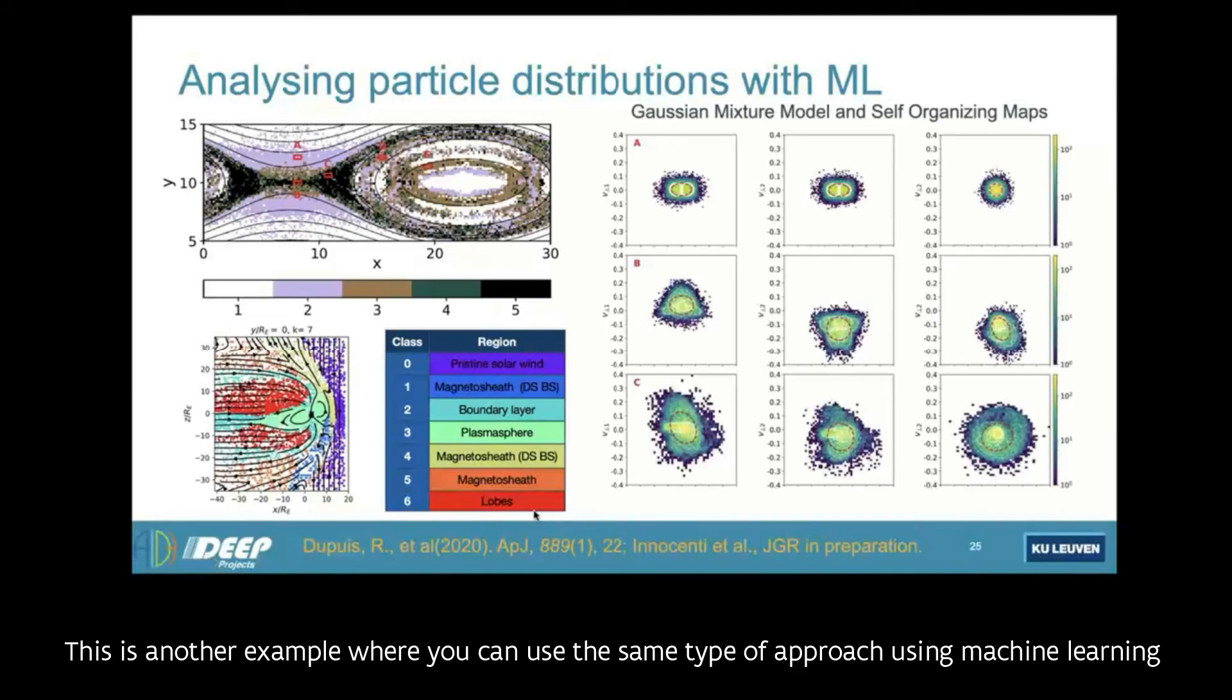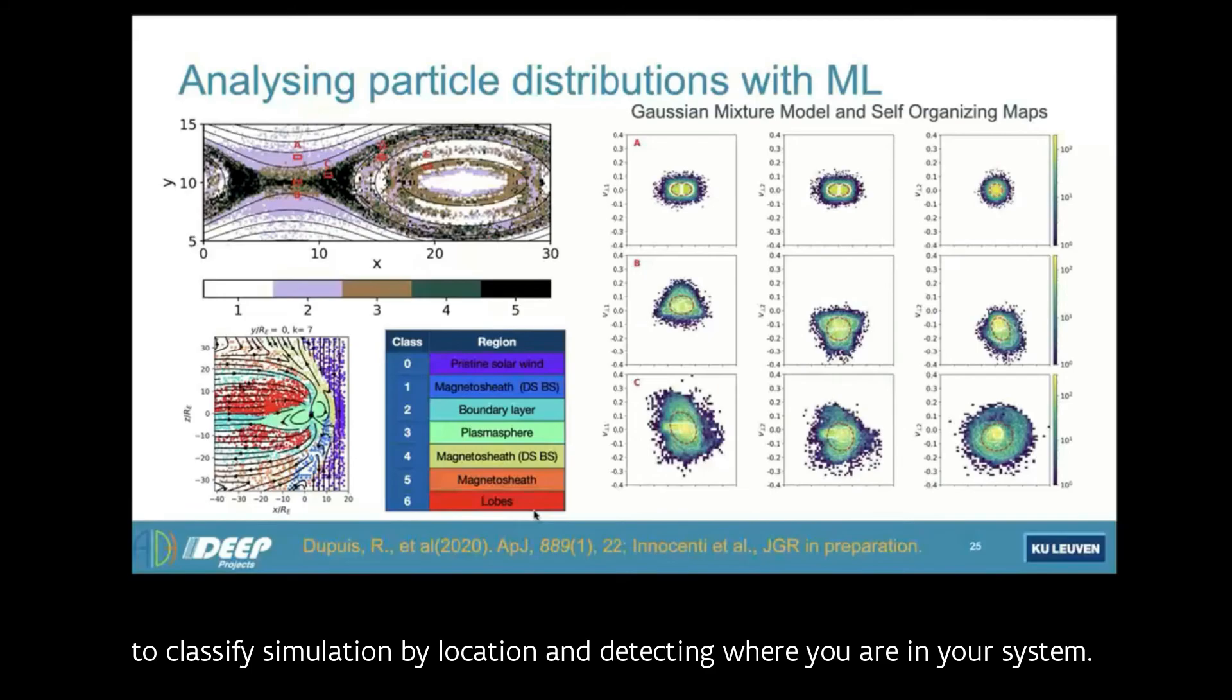This is another example where you can use the same type of approach using machine learning to classify simulation by location and detecting where you are in your system, which you can also use for a space mission to tell a spacecraft where you are in the solar system.